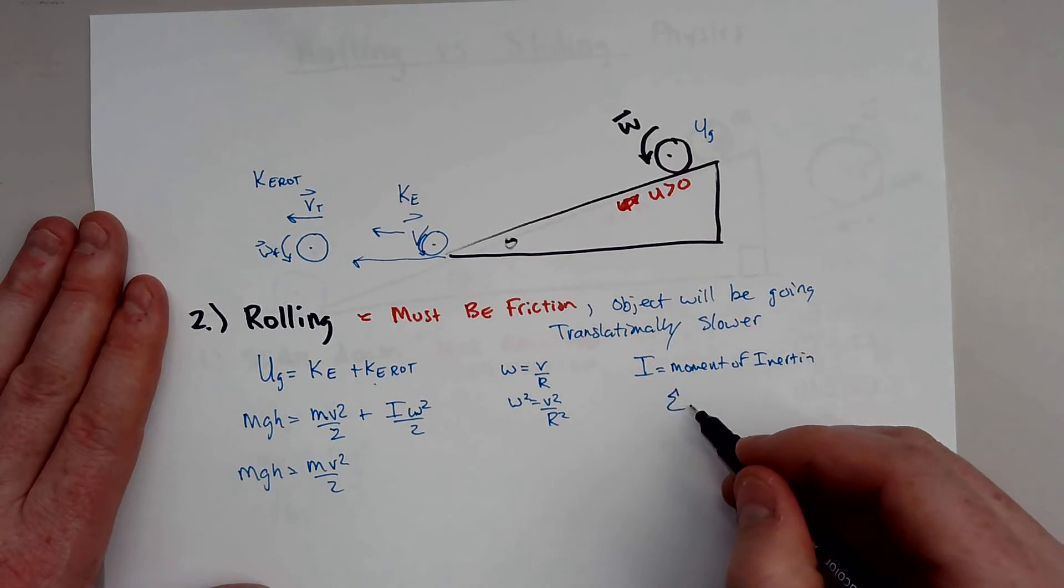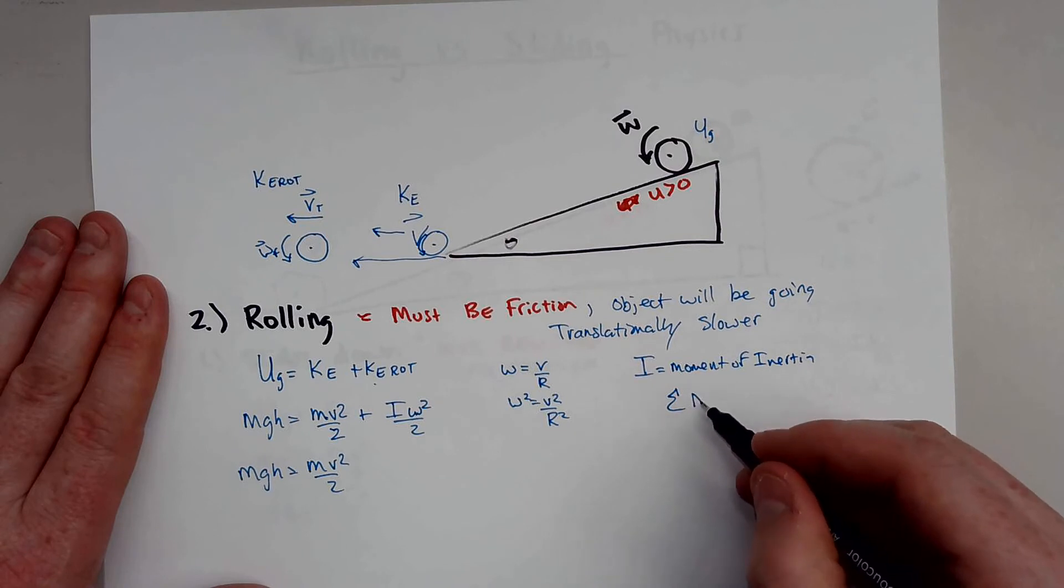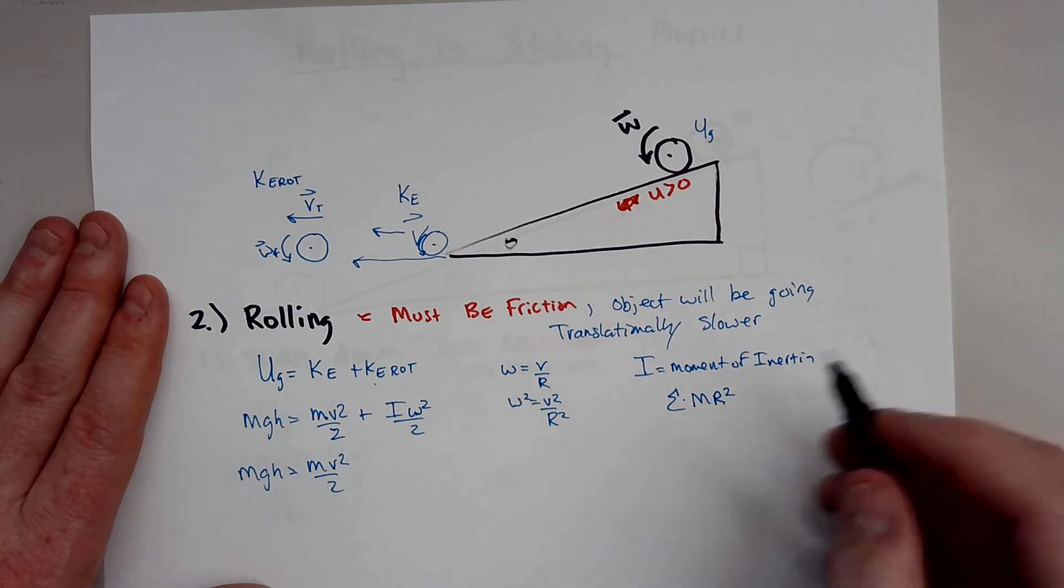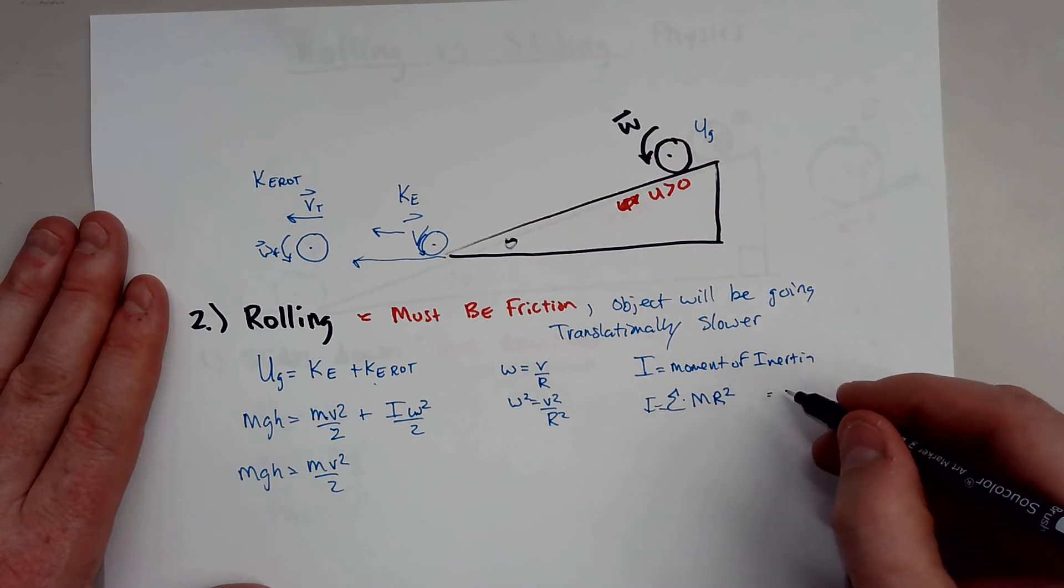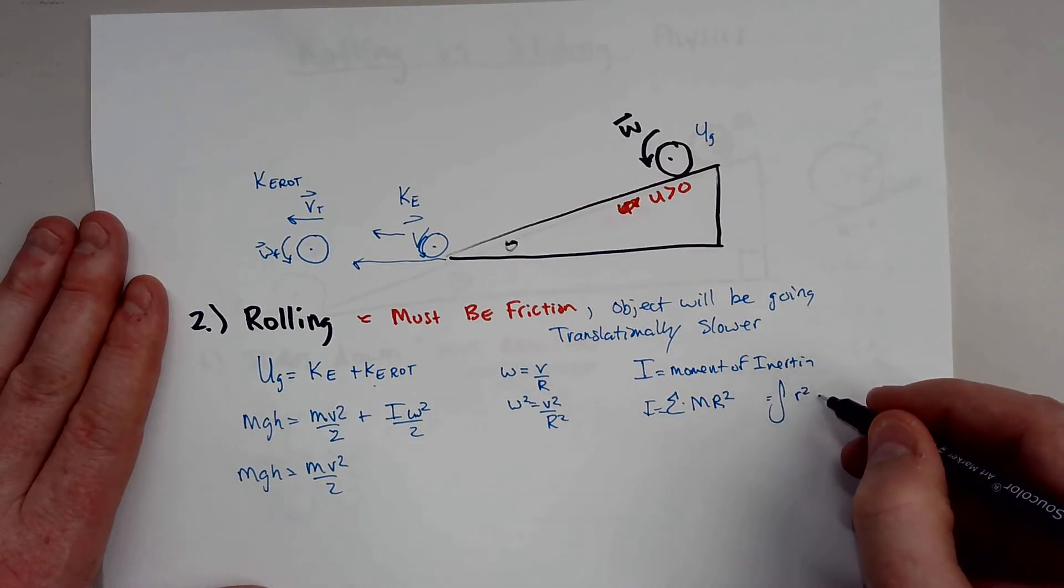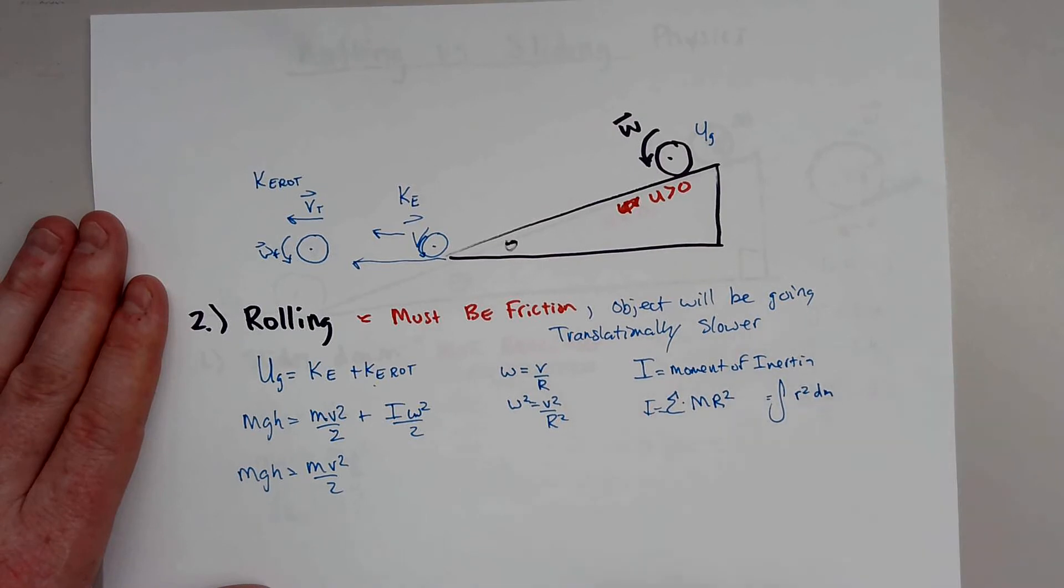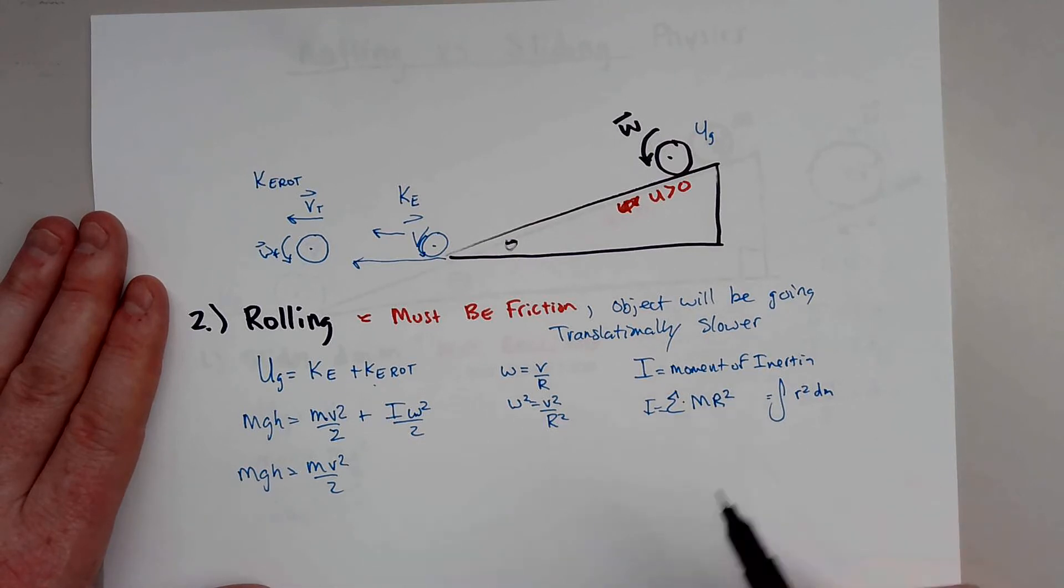And usually it'll be, you remember, a moment of inertia is defined as the summation of m times r squared. So it can kind of change, or it's just the indefinite integral of r squared with respect to mass. So again, you can find this numerous ways. So you can do it with calculus or don't have to do it with calculus, but usually it's given.